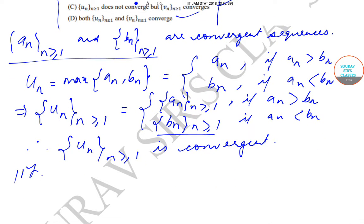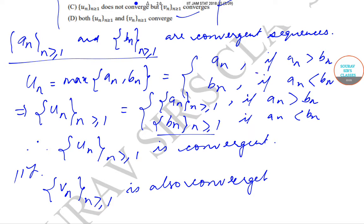Similarly, we can show that v_n is also convergent. If a_n > b_n, then v_n = min(a_n, b_n) = b_n, and b_n is a convergent sequence. Also, if a_n < b_n, then v_n equals a_n, and a_n is also a convergent sequence. So both a_n and b_n are convergent, meaning v_n is convergent in all cases.